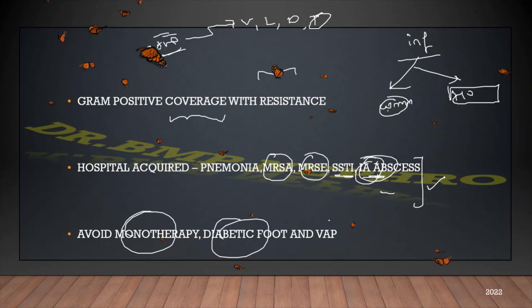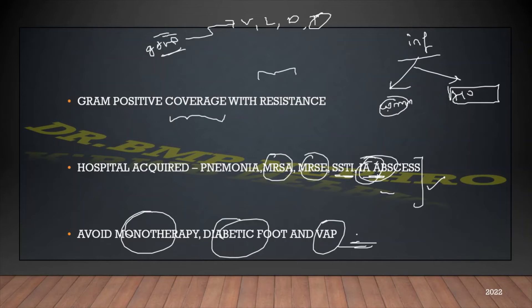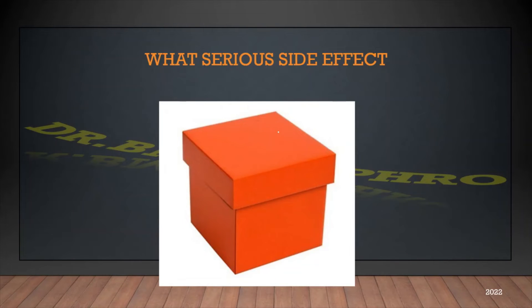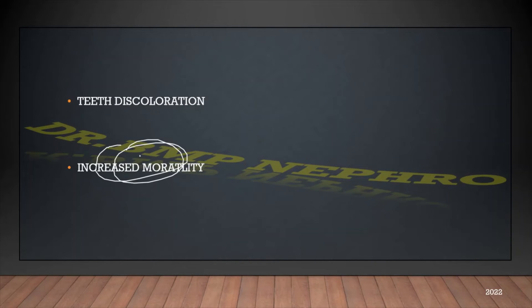Usually the response in diabetic foot and ventilator-associated pneumonia is very poor. There is documentation in previous literature that tigecycline might not work well in diabetic foot and ventilator-associated pneumonia. An important black box warning is that based on randomized control trials, there is an increased chance of mortality in patients who received tigecycline, though the reason for this mortality — whether cardiovascular or otherwise — is not clearly mentioned.